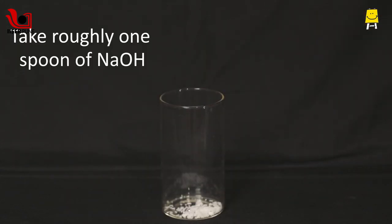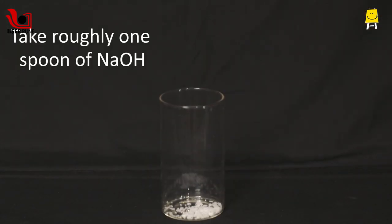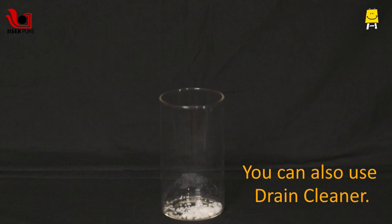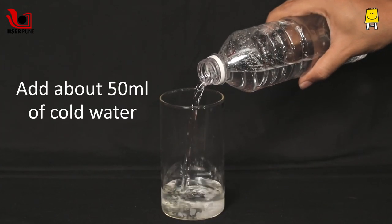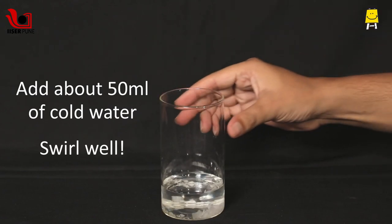Add one spoon of sodium hydroxide or NaOH in a glass. You can also use drain cleaner. Add about 50 ml of cold water and swirl.